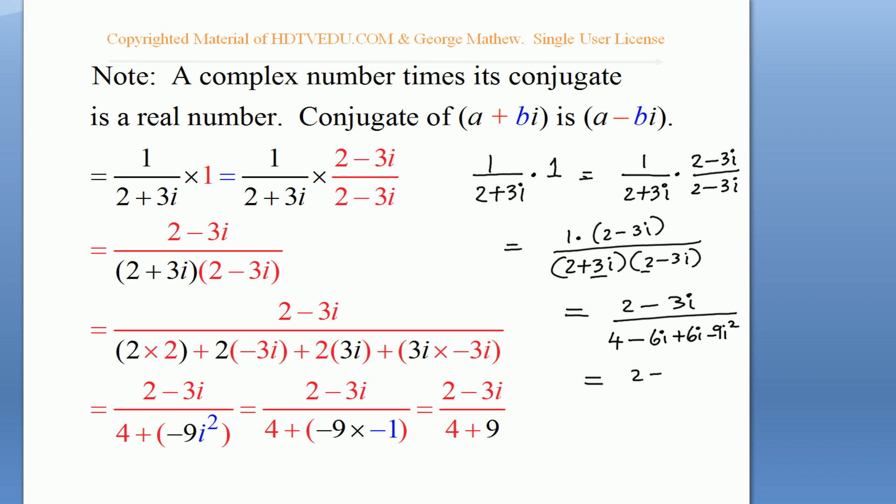So, this is as good as 2 minus 3i over 4 minus 9. What is i squared? i squared is negative 1. So, we get 2 minus 3i over 4 plus 9. And that's what I have done on the left.